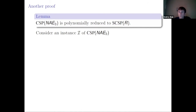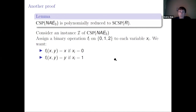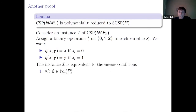Consider an instance of CSP and assign a binary operation Fi on the three-element domain to each variable Xi. I want Fi to be the first projection if Xi=0, and the second projection if Xi=1. I am claiming the instance I is equivalent to certain conditions. These conditions are not exactly minor conditions but were inspired by that idea. All operations Fi should preserve the relation R.